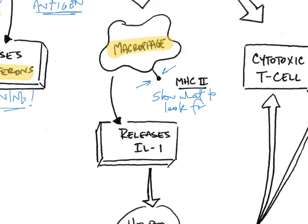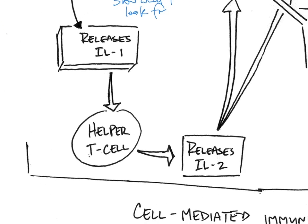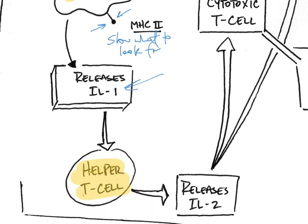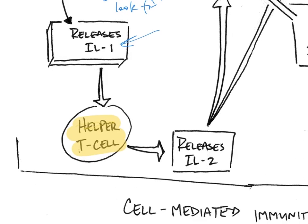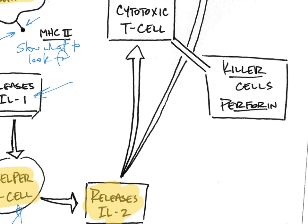The macrophage will release IL-1, interleukin-1, and that stimulates the production of helper T cells. If you think about our cell pathways: there's some kind of signal, an intermediate is released into the body, and that stimulates a response somewhere else. So helper T cells are created — this is an intermediate. These T cells then release interleukin-2, a second intermediate, and that does a couple of different things.